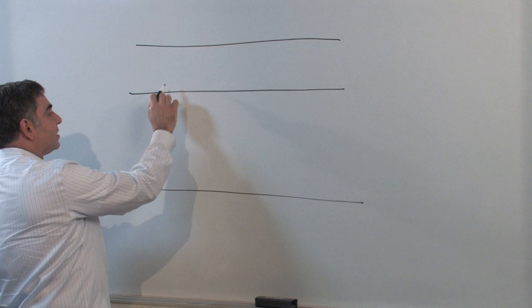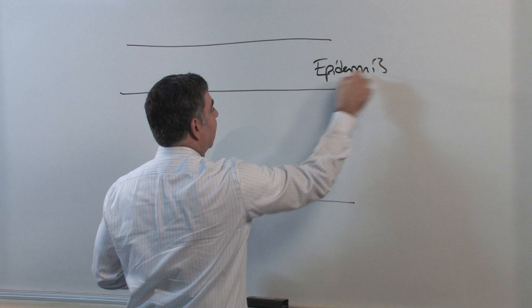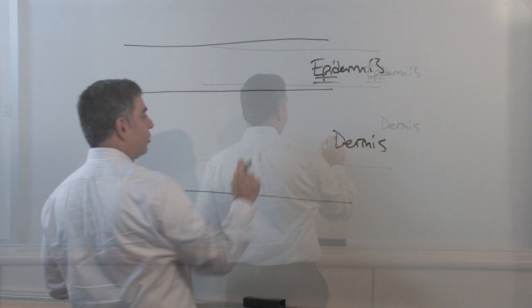The skin is made up of two layers, the epidermis, epi meaning above, and dermis, so above the dermis. So this is the dermal layer and this is the epidermal layer.